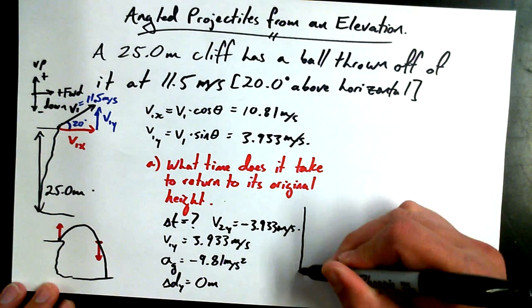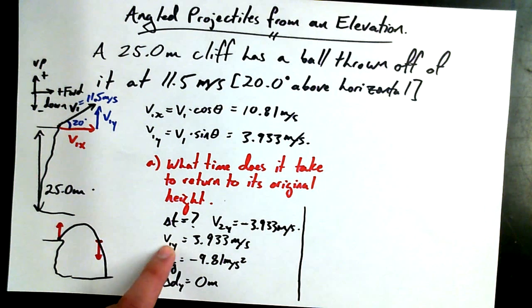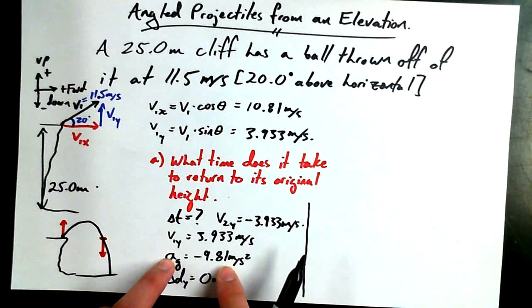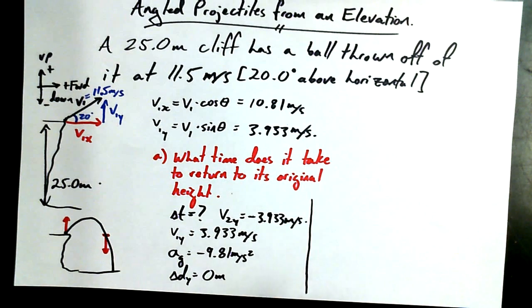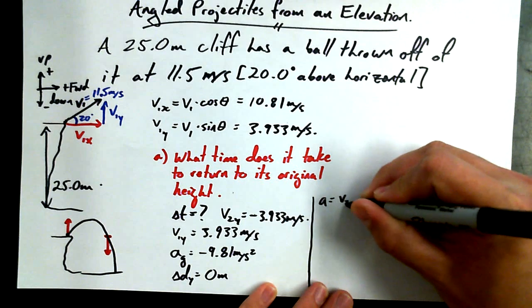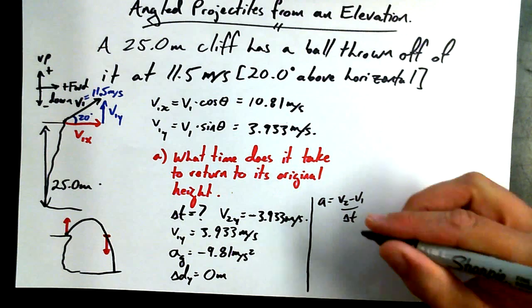All right, so how much time does it take to come back down again? We know its initial velocity in the Y direction, its final velocity in the Y direction, the acceleration it experiences, and the displacement. We know four things. We can easily find a fifth thing. So what we could do is say, I want to find time. I know A, V1, and V2. Can I use acceleration equals V2 minus V1 over delta T? Is that fair game? I'm going to isolate for delta T. Delta T equals V2 minus V1 over A.